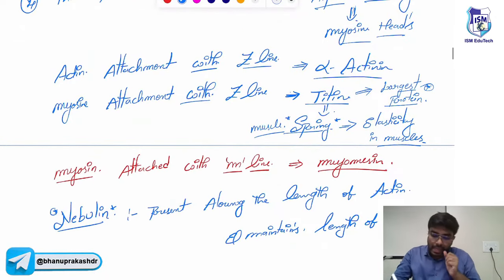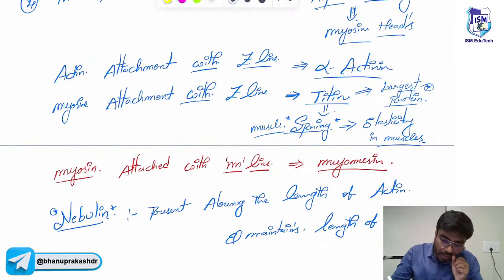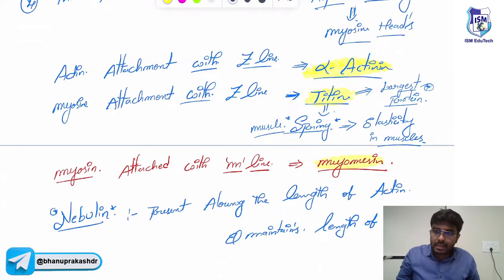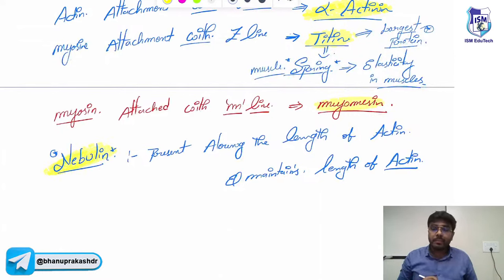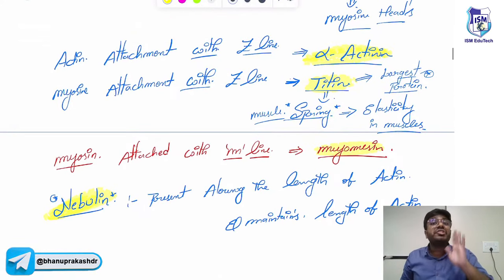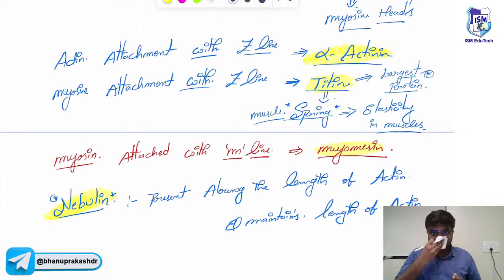So I have discussed the important structural proteins: alpha-actinin, titin, myomesin, and nebulin. These four are completed — these are the structural proteins present in the muscle, present in the sarcomere.